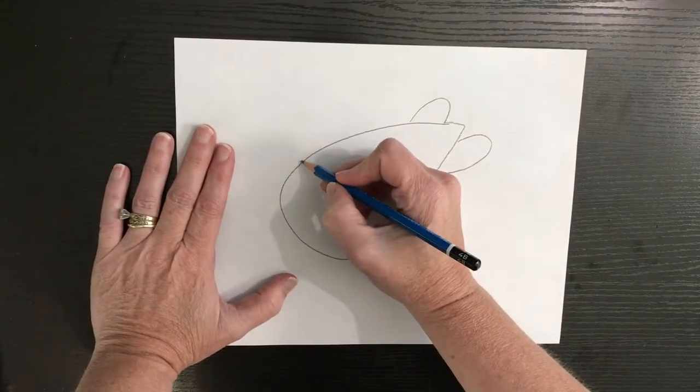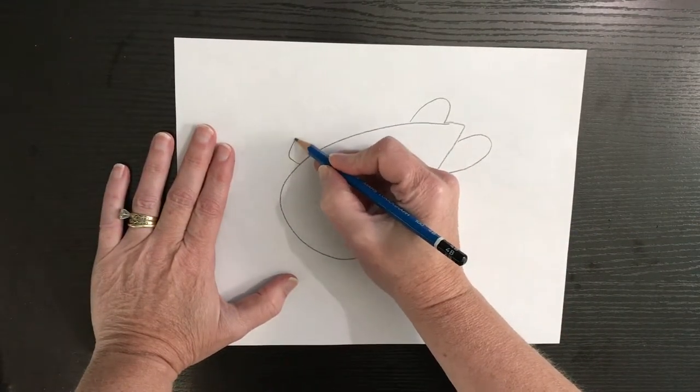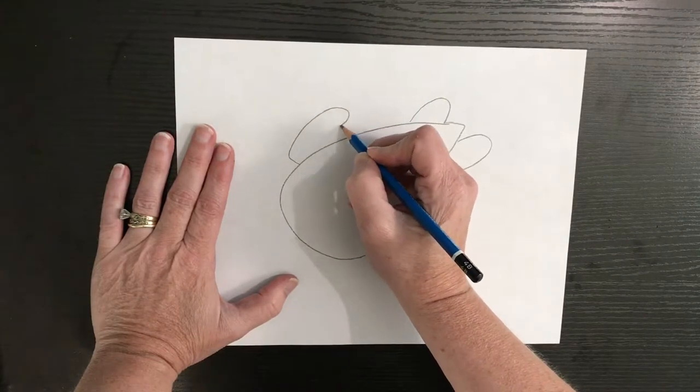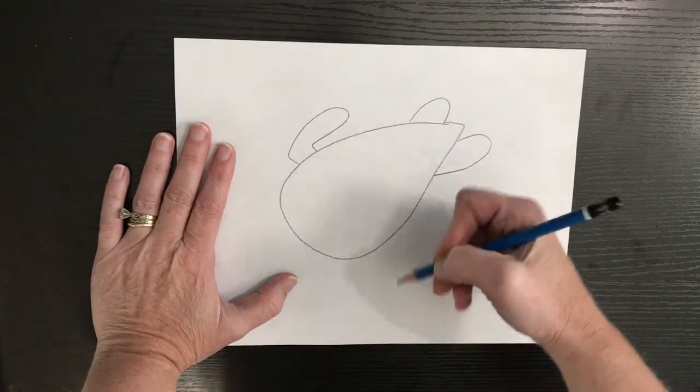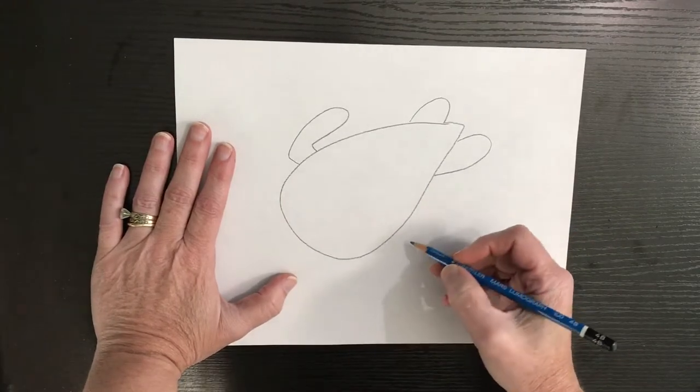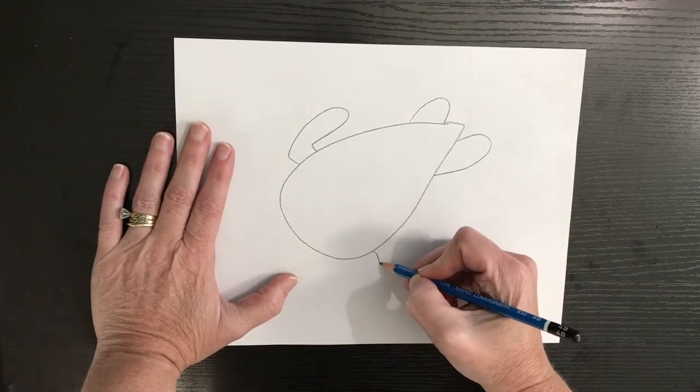His front legs are paddles, so to speak. That's how he swims. This one's going to come out from here, go out over and in, and this one is closer to us so it's going to be a little bit wider and larger.